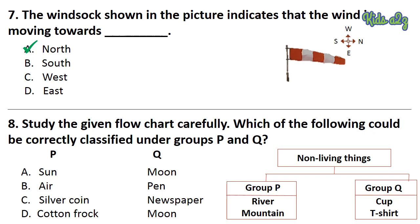Question 8: Study the given flow chart carefully. Which of the following would be correctly classified under groups P and Q? Please look at the chart carefully. The answer is Option B — Air and Pan. Here, Group P is for natural things and Group Q is for man-made things, so the answer is Option B — Air and Pan.